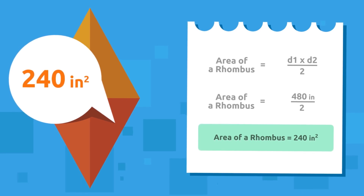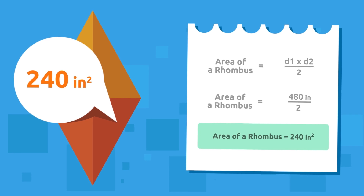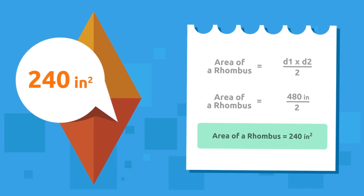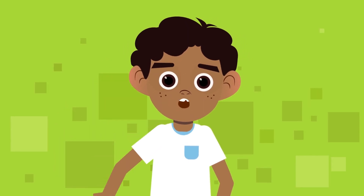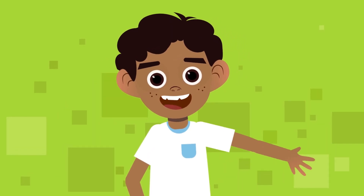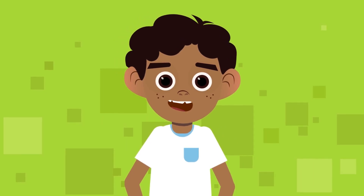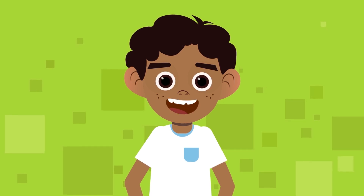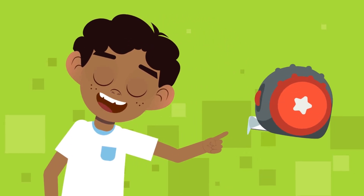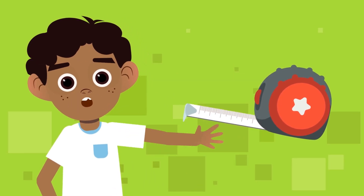We've helped Anna find out her kite's area — that's awesome! As you have seen, knowing how to calculate the area of a rhombus is very important. All you have to do is multiply the longest diagonal by the shortest diagonal and divide the result by two. Are you ready to calculate the area of the next rhombus you find? See you later!